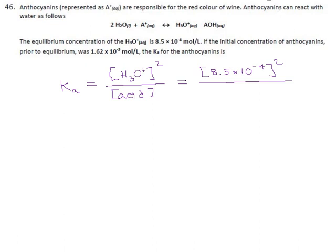The amount of acid that we have at equilibrium is the original amount, which is 1.62 times 10 to the minus 3 minus, and this is the amount of acid that has dissociated and it's a fair bit. It's 8.5 times 10 to the minus 4. That's the amount that we've lost.